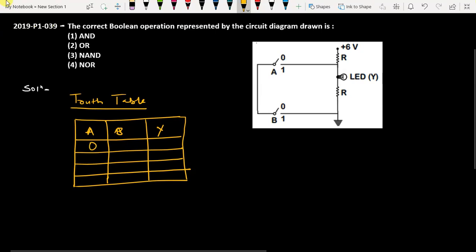When input A is 0, when the switch is open, even then the LED will glow because we have zero potential here, zero volt, and six volt here, so the current will flow through this. So even if it is 0, 0, the output is 1.